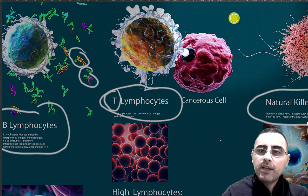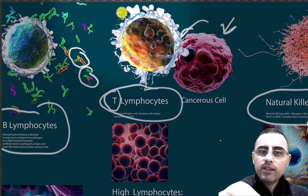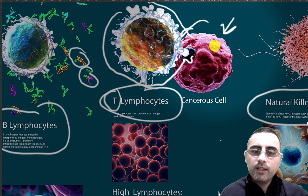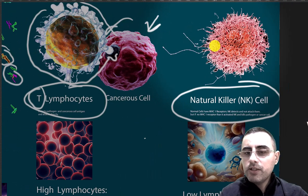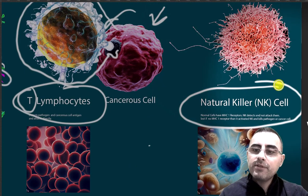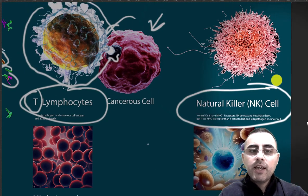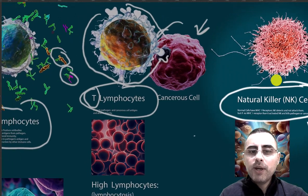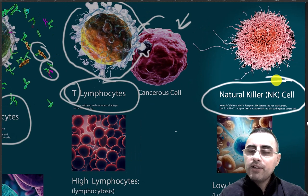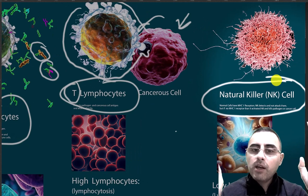For example, this pink cell is a cancerous cell, and you can see that T-lymphocytes directly attack and will destroy these cancerous cells. Natural killers are one of the first responders of the immune system.